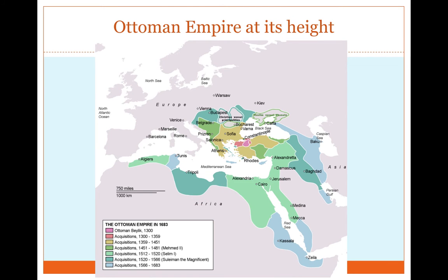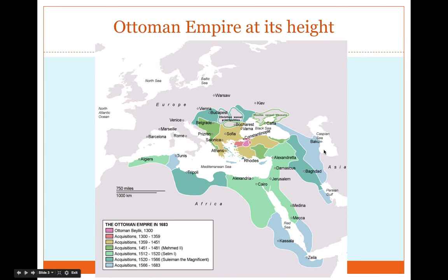The Ottoman Empire, out of all the gunpowder empires we discussed in period four, was the largest, and it also lasted the longest, far into modernity — it didn't actually completely decline and collapse until the end of World War I. Note the geographic span of the Ottoman Empire: we have an empire influencing three different continents. Even though it's not going too far into Asia, its capital in Istanbul essentially provided a great trading point of access to Asia at its height.